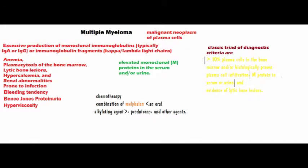As these plasma cells infiltrate the bone marrow, there is little space left, which causes anemia, neutropenia, and thrombocytopenia. With the activation of osteoclast activation factor causing lytic lesions in bone, there is hypercalcemia, and the patient is also more prone to pain and fracture.